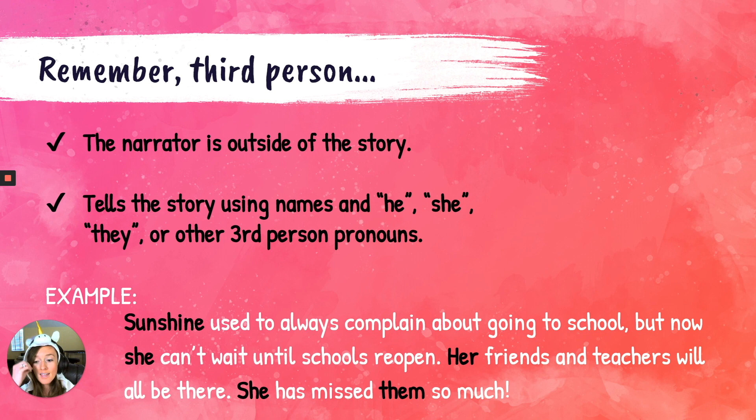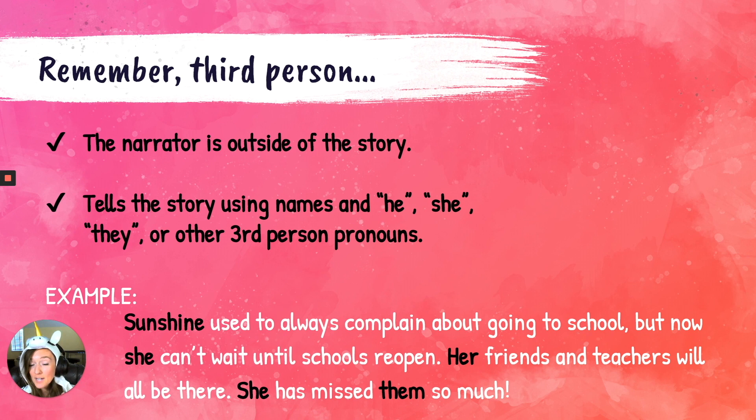Our example from yesterday was: 'Sunshine used to always complain about going to school, but now she can't wait until school's reopened. Her friends and teachers will all be there. She has missed them so much.' We're talking about someone else — about Sunshine, not myself.